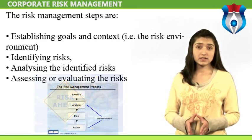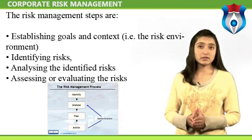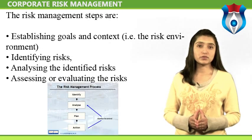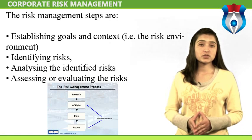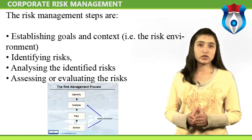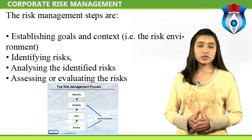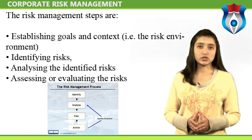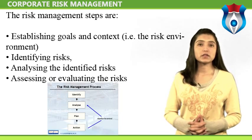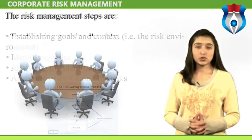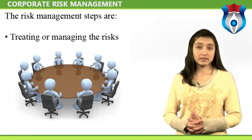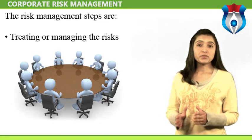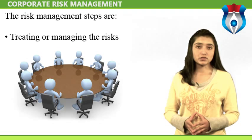Once the risks have been analyzed, they are evaluated using risk matrices. The tolerable risk is generally documented with a risk matrix — should the protected risk be greater than the tolerable risk, then the specific risk needs additional control measures or improvements in the effectiveness of existing controls. Treating or managing the risks: an unacceptable risk requires treatment. The objective of this stage is to develop cost-effective options for treating the risks.